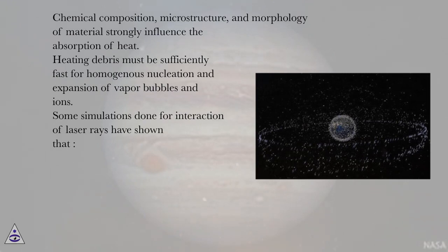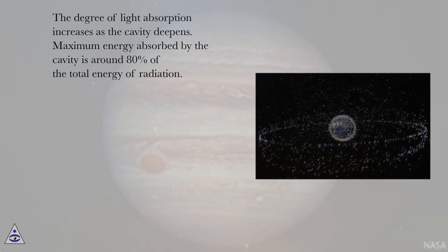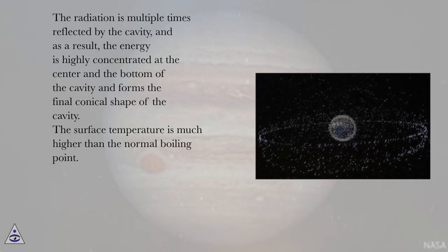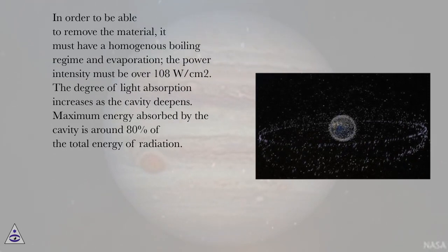Some simulations done for interaction of laser rays have shown that the degree of light absorption increases as the cavity deepens. Maximum energy absorbed by the cavity is around 80% of the total energy of radiation. The radiation is multiple times reflected by the cavity, and as a result, the energy is highly concentrated at the center and the bottom of the cavity and forms the final conical shape of the cavity. The surface temperature is much higher than the normal boiling point. In order to be able to remove the material, it must have a homogeneous boiling regime and evaporation, the power intensity must be over 10 to the 8 watts per square centimeter.